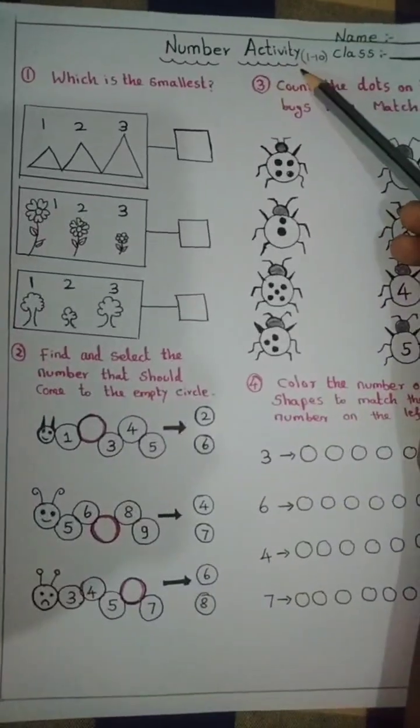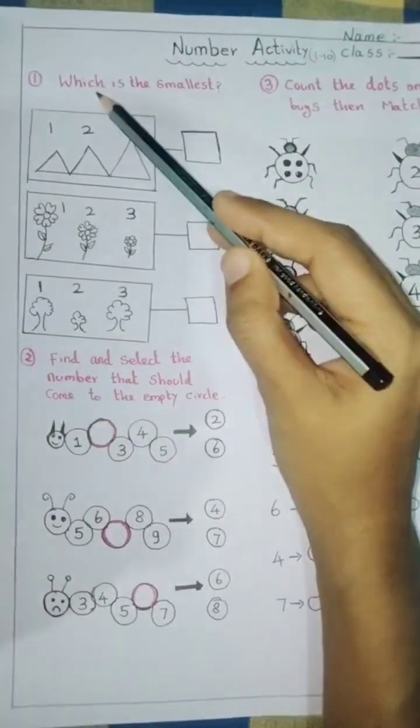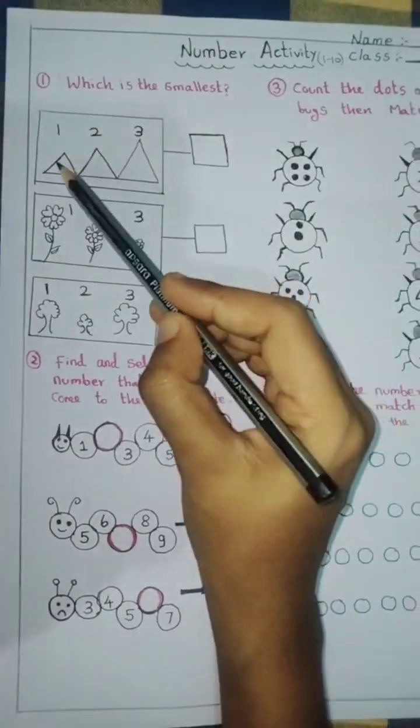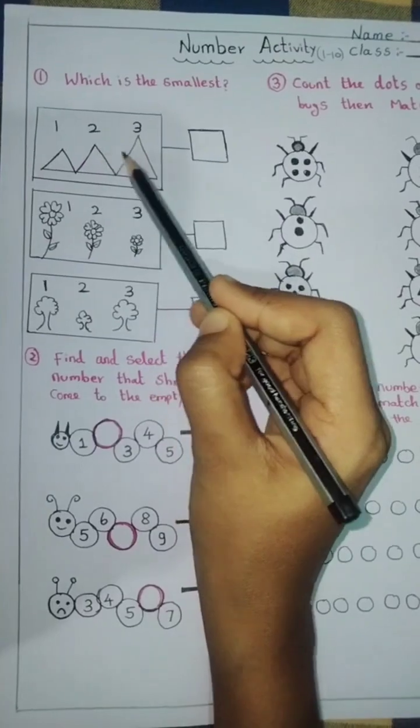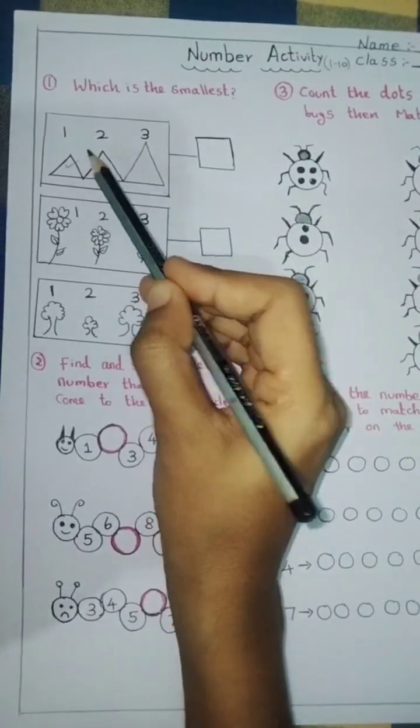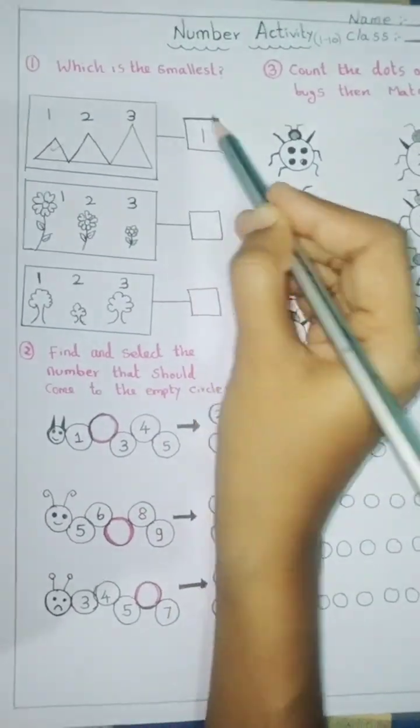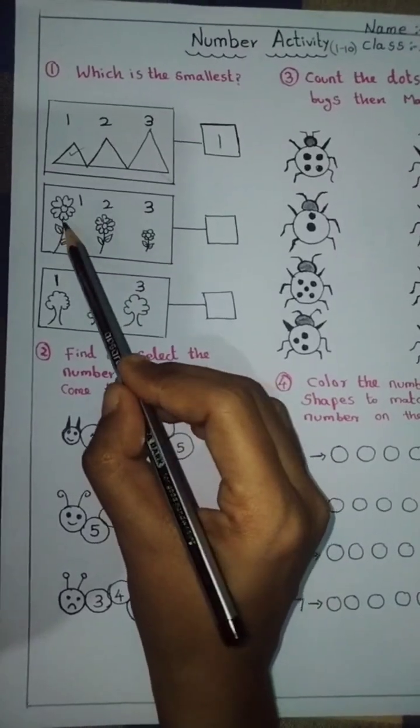Number activity 1 to 10. First one, which is the smallest? Triangle shape 1, 2, and 3. 1 is smallest. Number 1, right. Number 1. Next, flower 1.